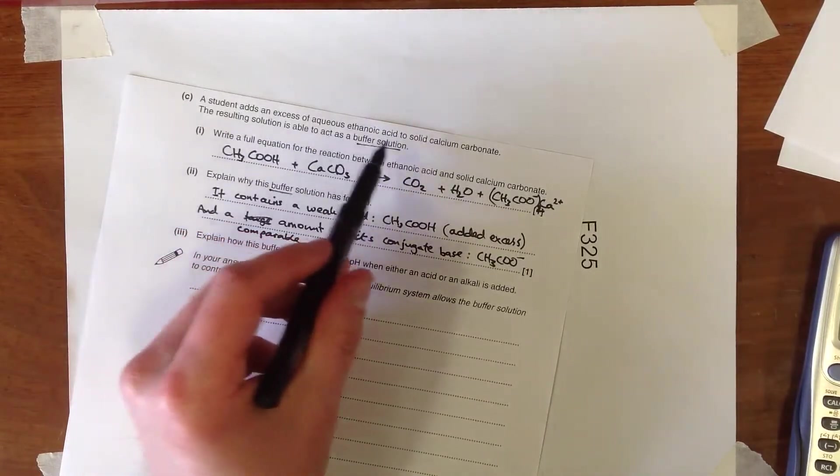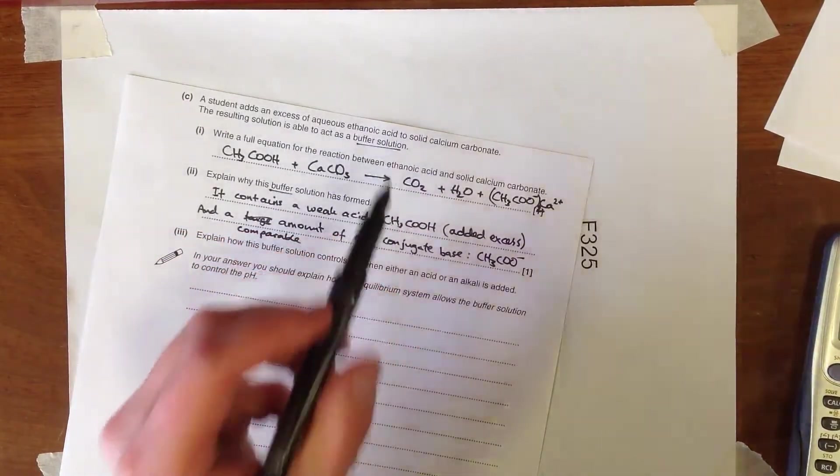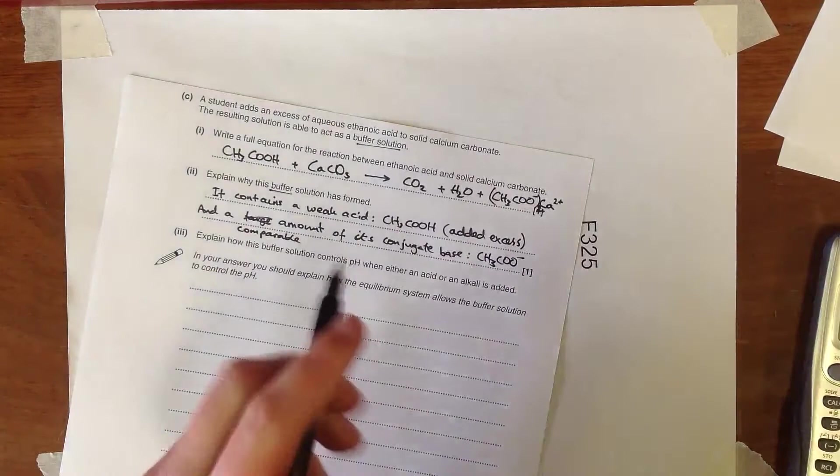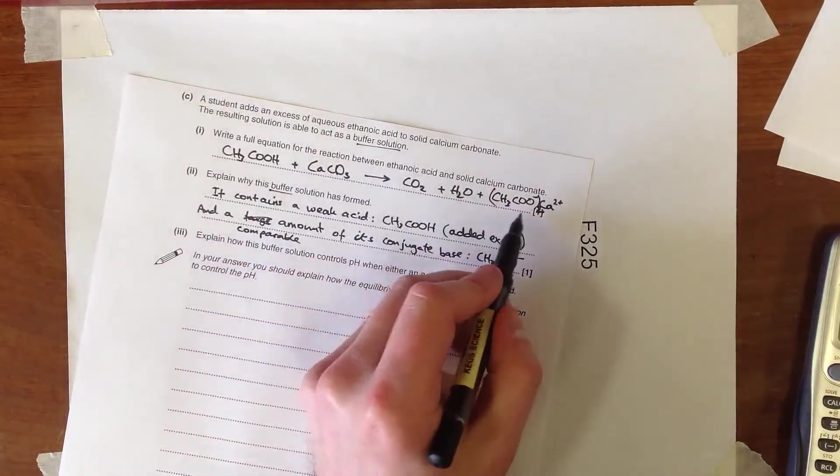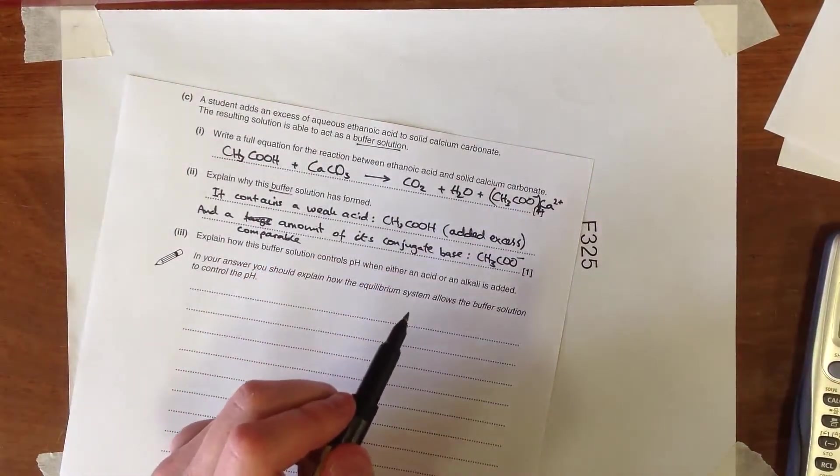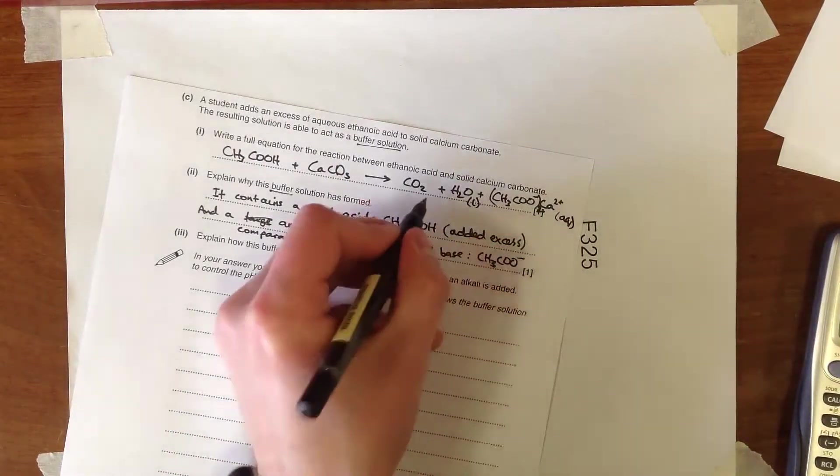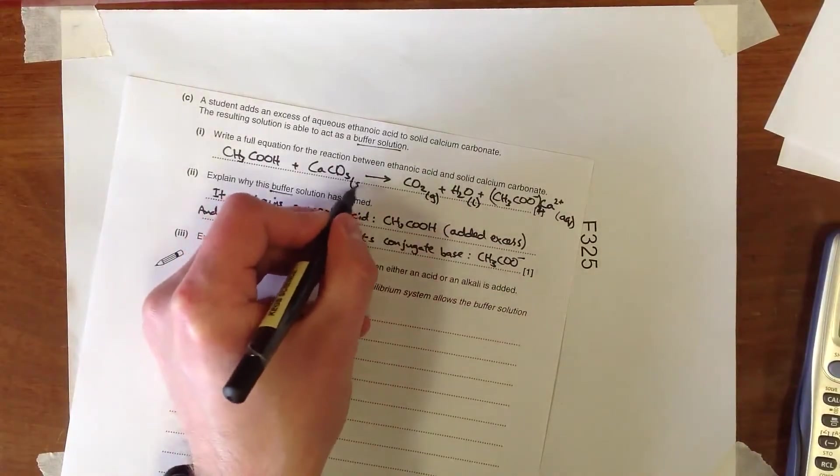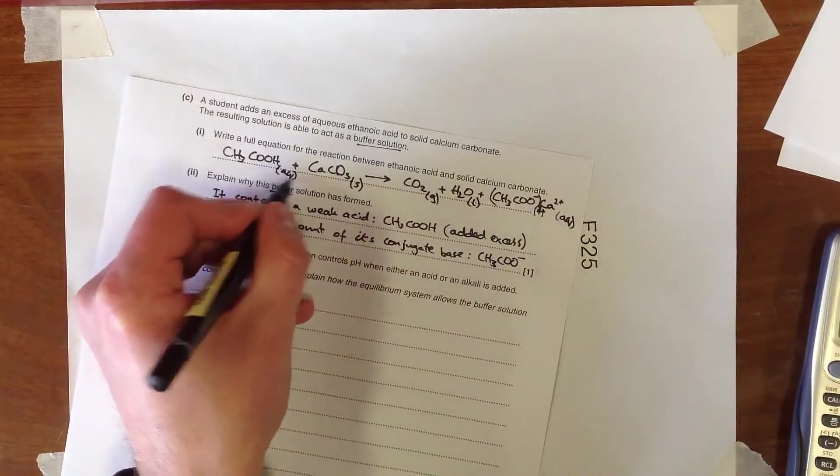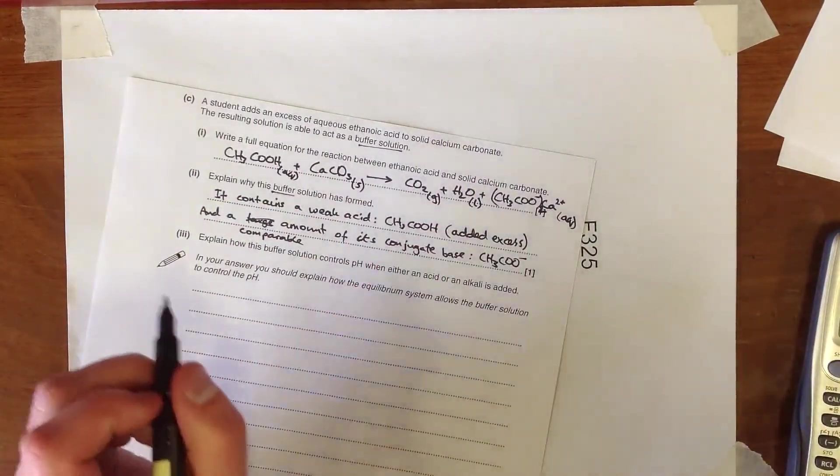So because we've added the excess of ethanoic acid, provided we haven't added the complete, we're going to have a large amount of ethanoate produced. And remember, this is a soluble salt. Here, all ethanoate salts are soluble. So if we put the state symbol in there, we know that this is a soluble ethanoate that's present.